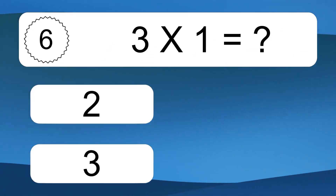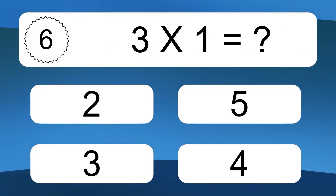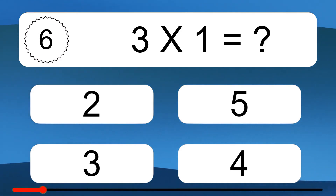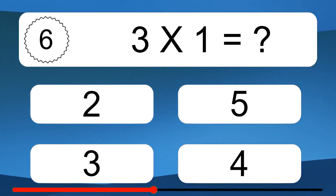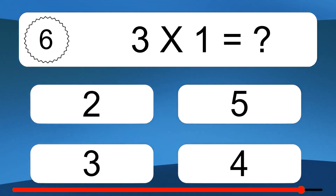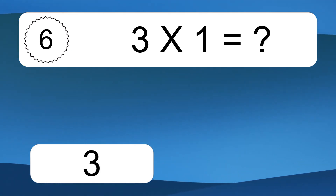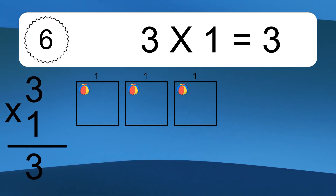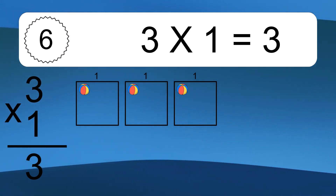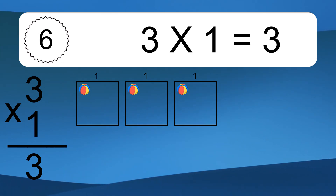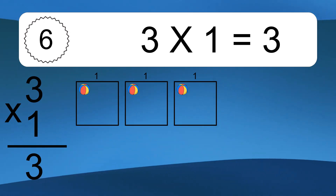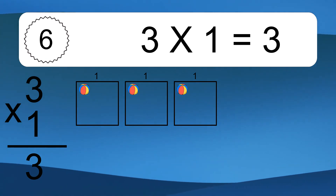Three times one equals what? Three times one equals three. We have three boxes, and each box has one colorful ball inside. If you count all the balls in all the boxes together, you will have three times one balls. This equals three balls.